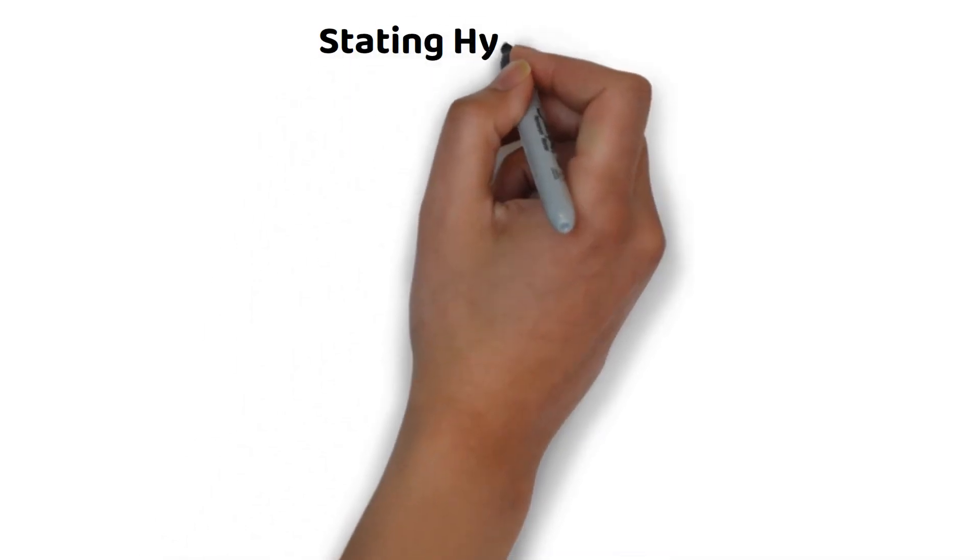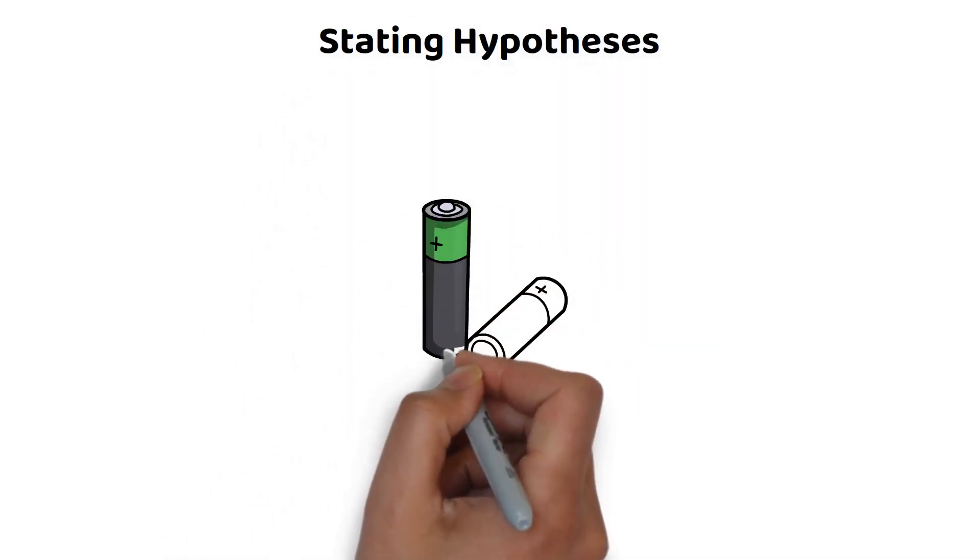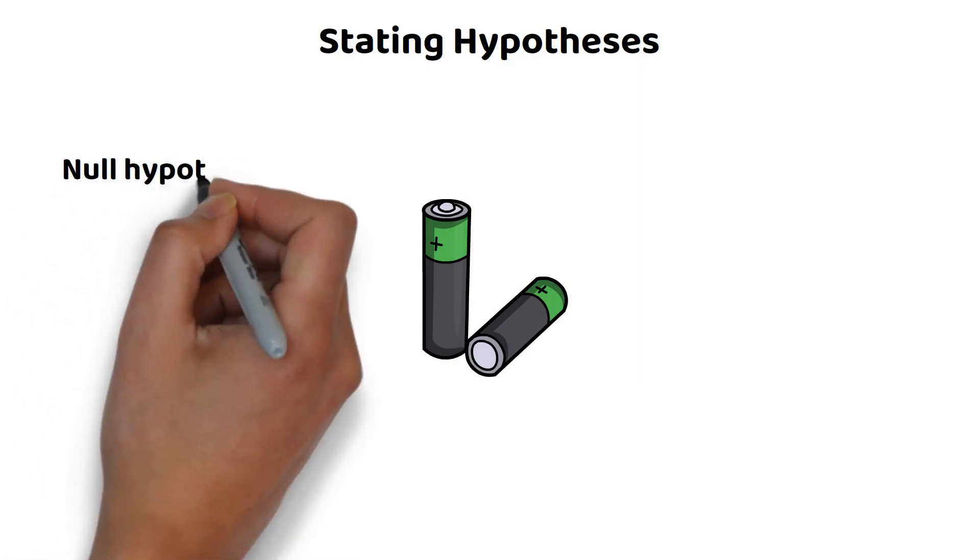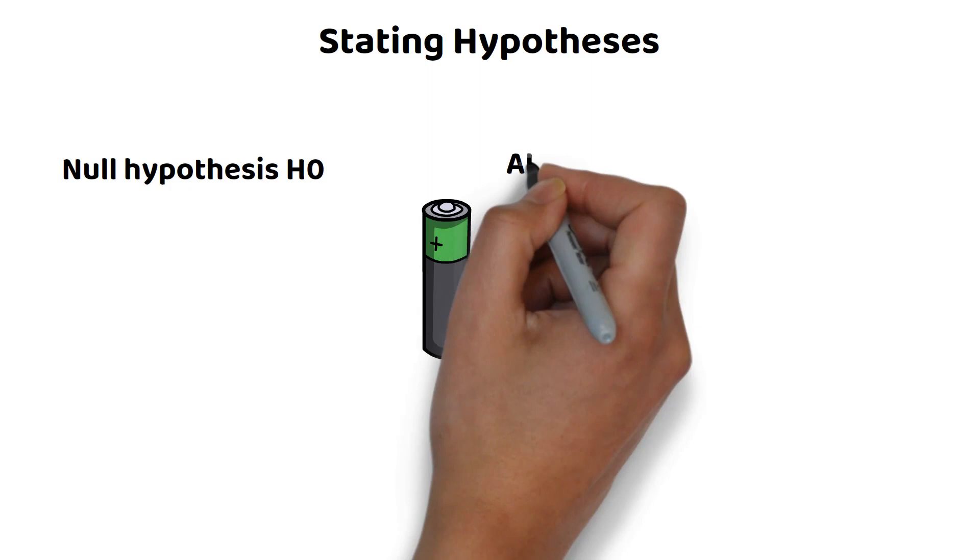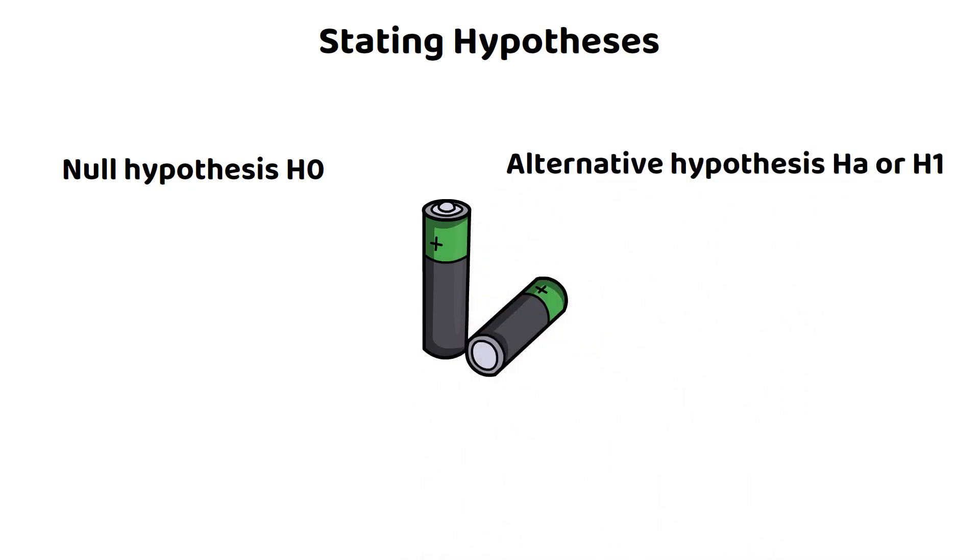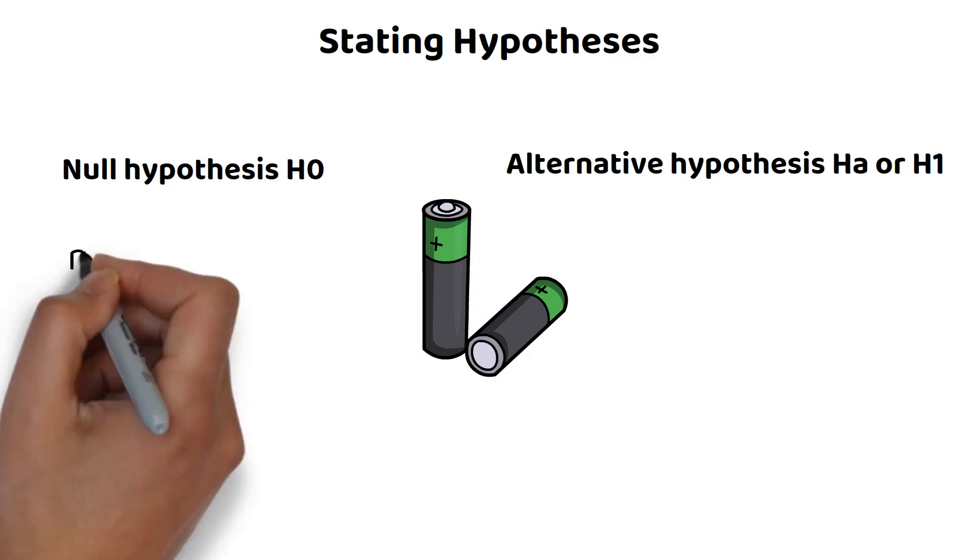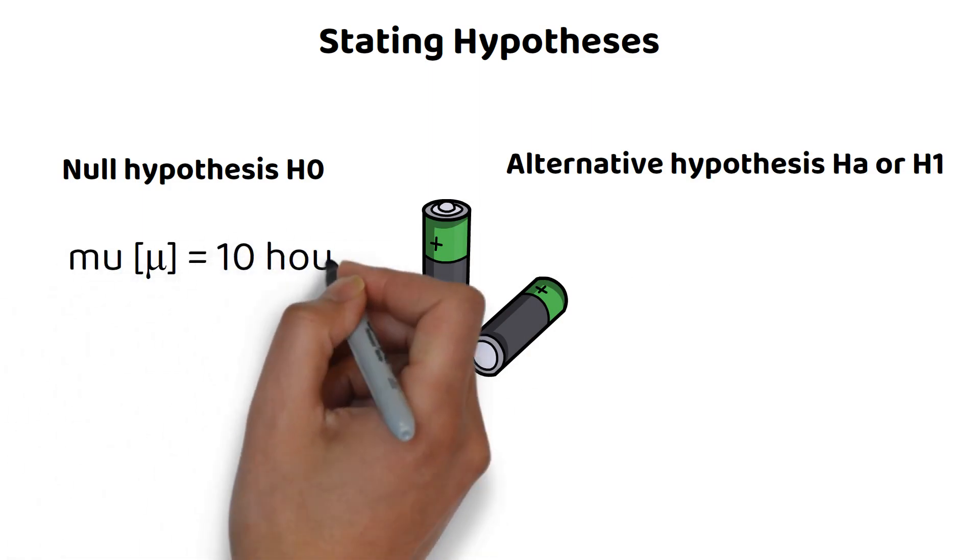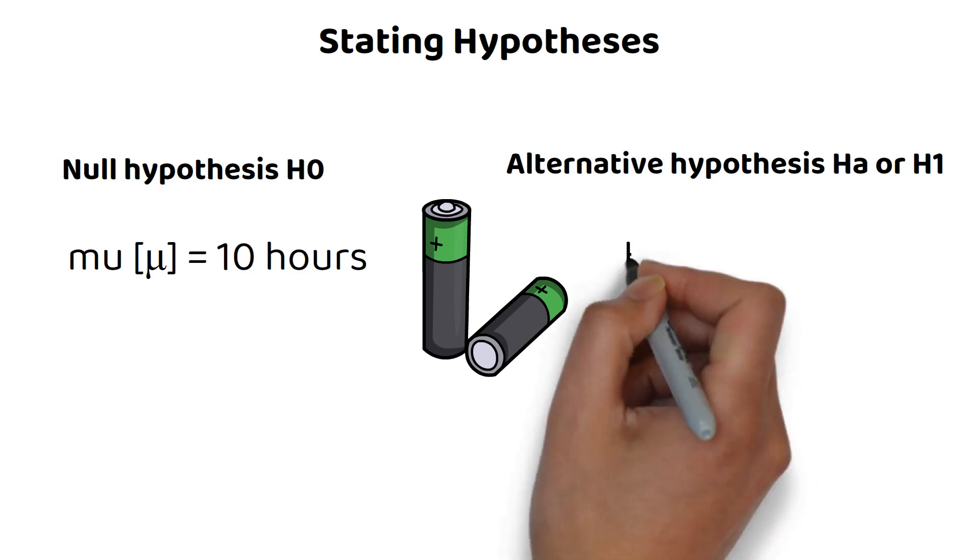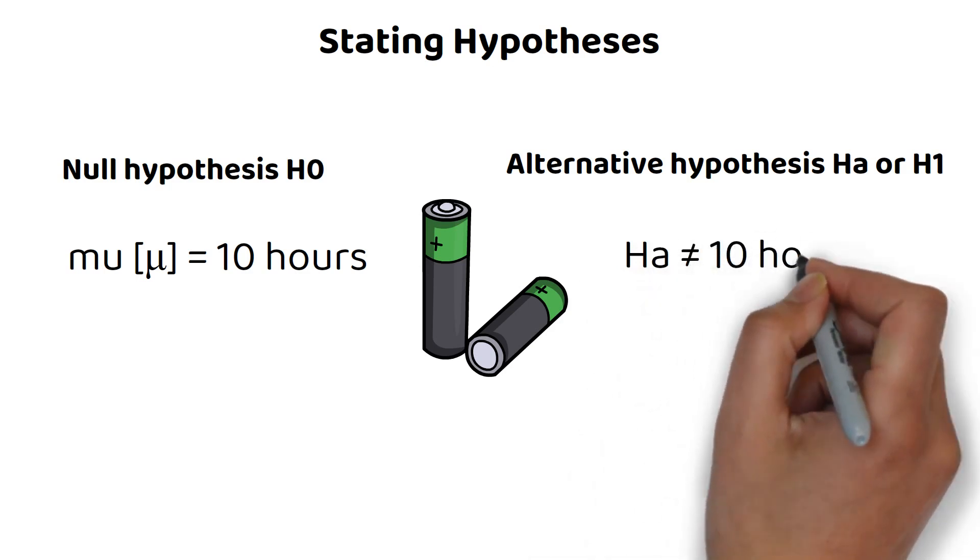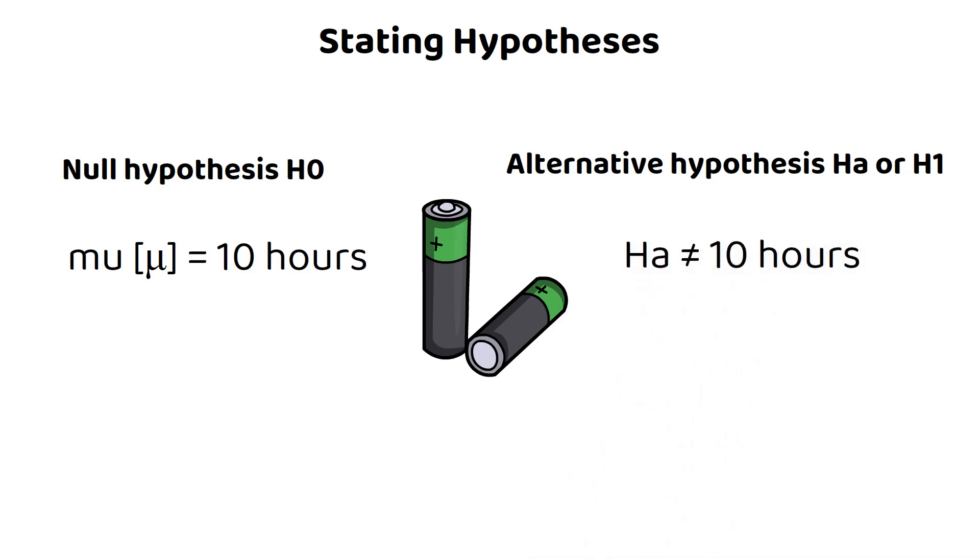Stating Hypothesis: At the heart of hypothesis testing are two opposing statements, the null hypothesis, often denoted as H0, and the alternative hypothesis, denoted as HA or H1. In our battery example, the null hypothesis would be H0: the mean average, which we'll call mu, is 10 hours, signifying the claim. The alternative hypothesis might be that our average is not 10 hours, indicating a belief that the batteries do not, in fact, last 10 hours on average.